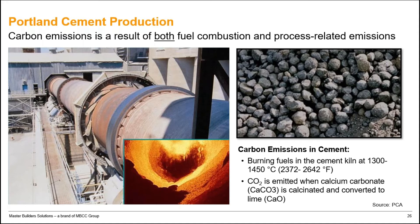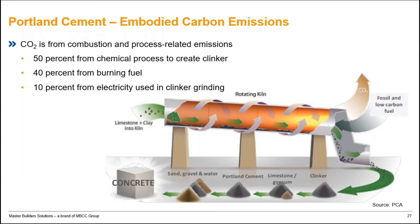Carbon emissions from cement result from both fuel combustion and process-related emissions. The manufacture of cement produces approximately 0.9 kilograms of CO2 for every kilogram of cement. About 50% of the CO2 emissions come from the chemical process of creating clinker — the conversion of limestone to calcium oxide and CO2. Approximately 40% are associated with fuel combustion burning the raw materials to 1,400°C. And approximately 10% are associated with grinding the clinker in a finish mill to the finer powder of cement.